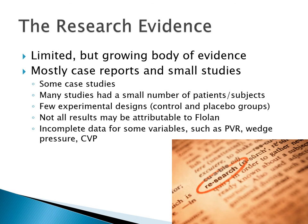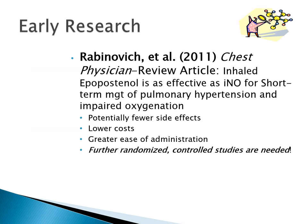Regarding research evidence: there is a limited but growing body of clinical research on Flolan. Many studies have had small numbers of patient subjects and few have experimental designs with both control and experimental groups. Not all results may be attributable to Flolan, and there is incomplete data for variables such as pulmonary vascular resistance, wedge pressure, and central venous pressure. A key early review by Rabinowitz and others in 2011 published in Chest Physician determined that inhaled Flolan is as effective as inhaled nitric oxide for short-term management of pulmonary hypertension and impaired oxygenation.